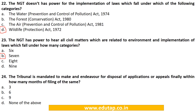MCQ 24: The Tribunal is mandated to make an endeavour for disposal of applications or appeals finally within how many months of filing? A. 3, B. 6, C. 9, D. None of the above. The correct answer is B. 6 months.